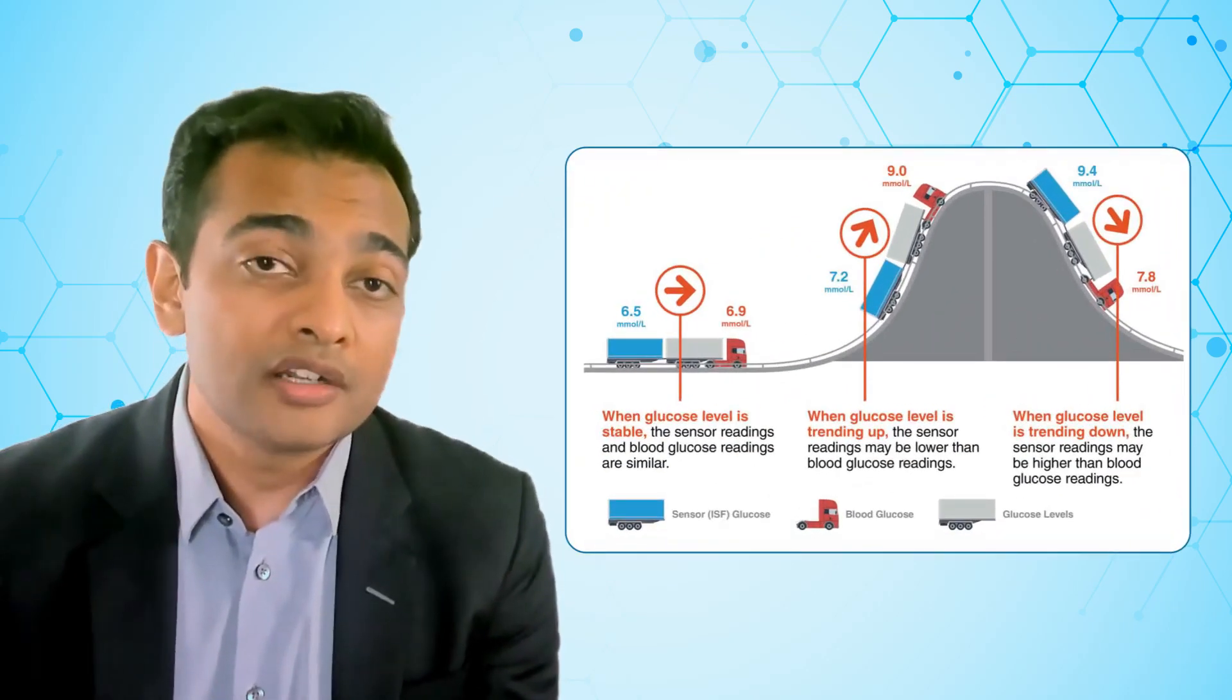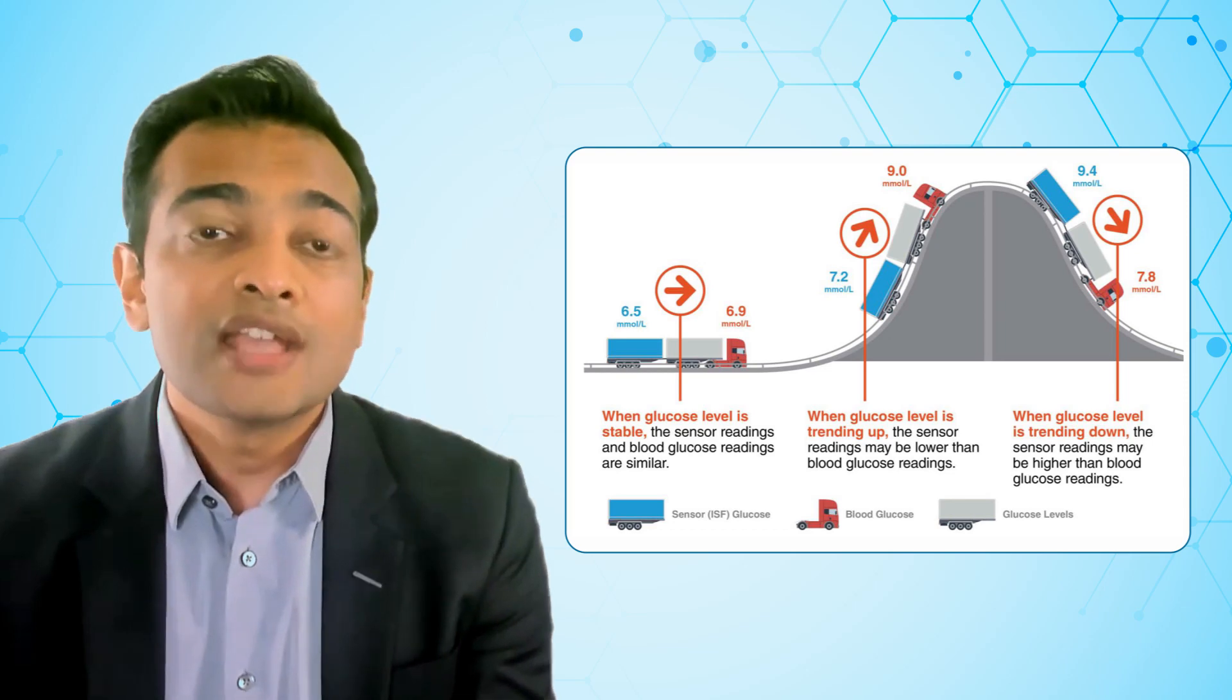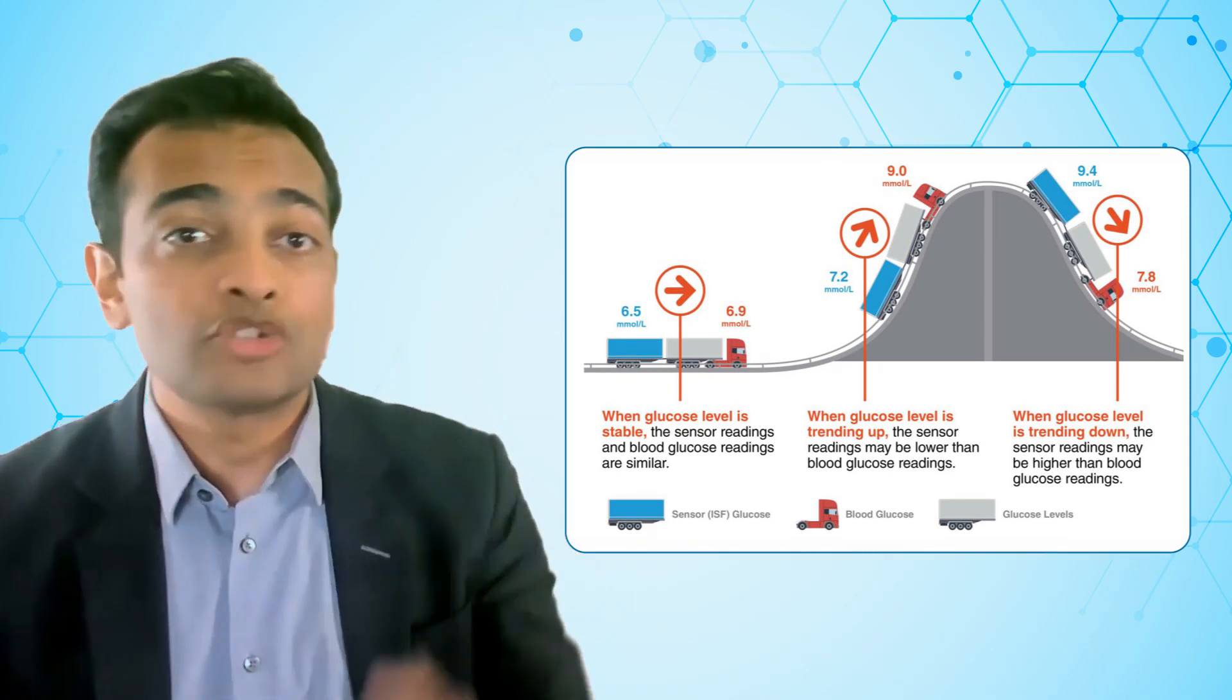It is important to understand that these sensors are checking interstitial glucose levels and hence there might be a slight lag between the blood glucose levels and what is measured by the sensors. Hence, some people may think that these sensors are inaccurate, particularly when you compare against a finger stick check at the same time. This is generally insignificant for the most part, but may differ during periods of rapid blood glucose change, such as right after a meal or at times when the blood sugars are rapidly dropping.